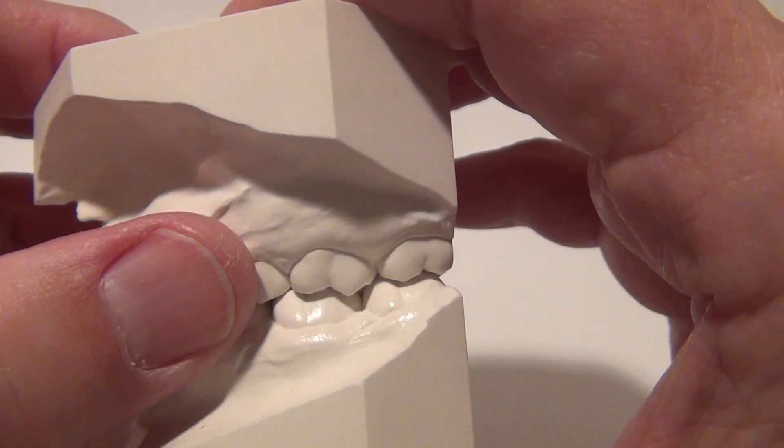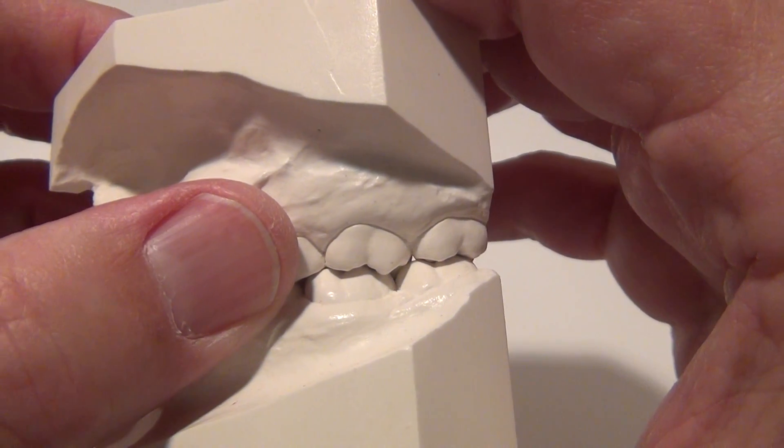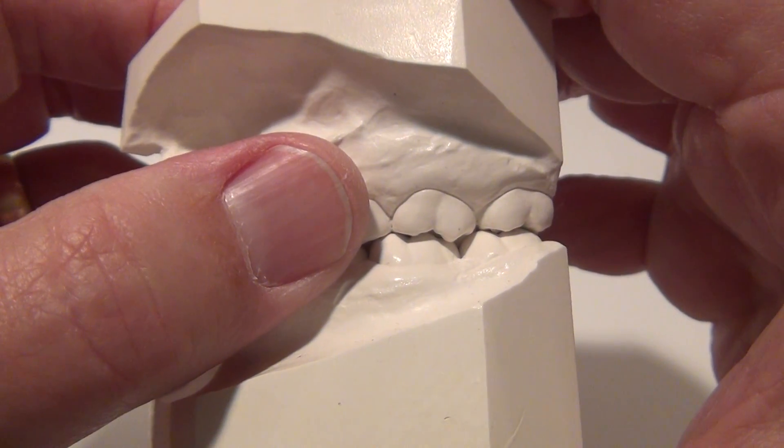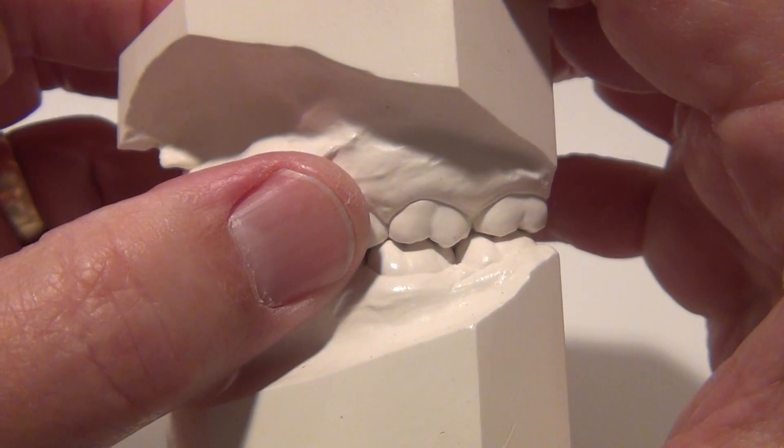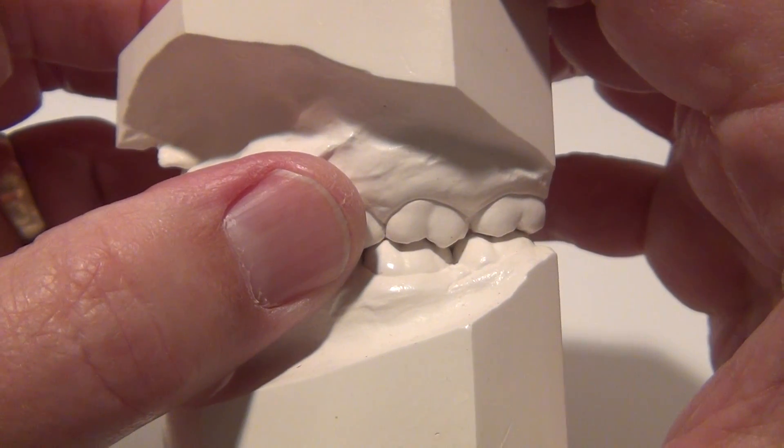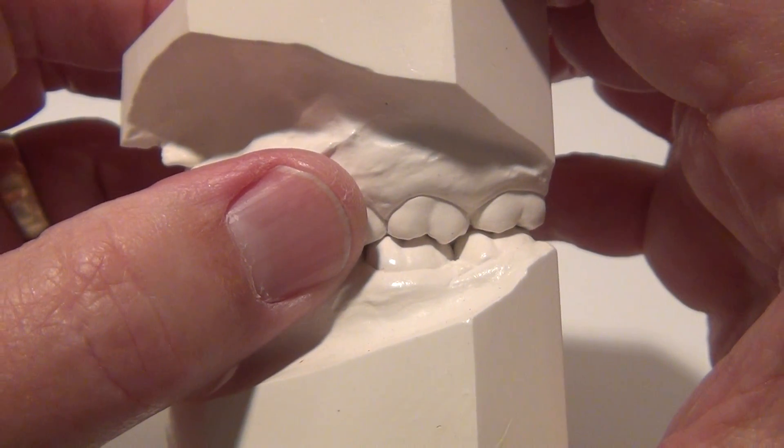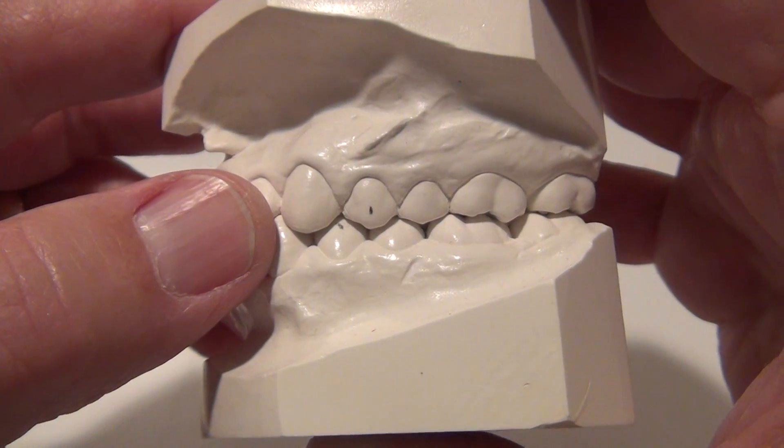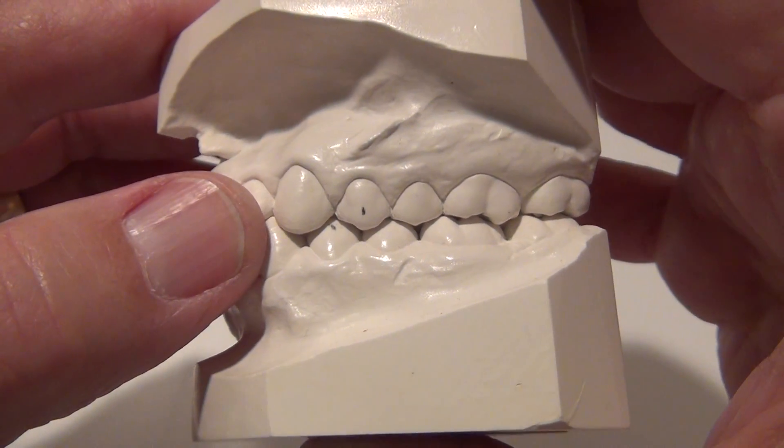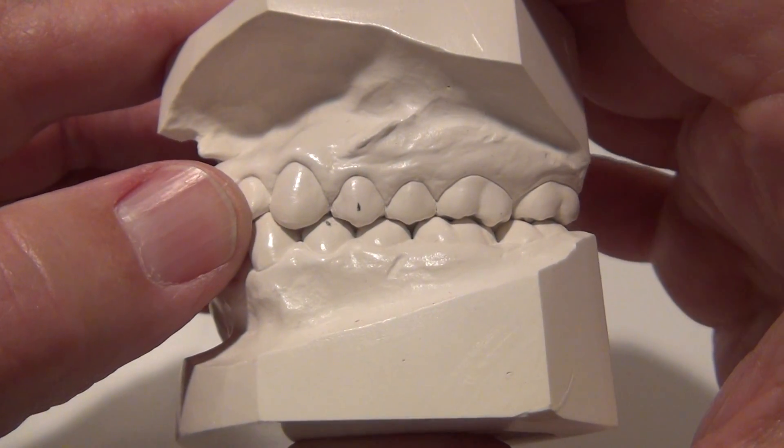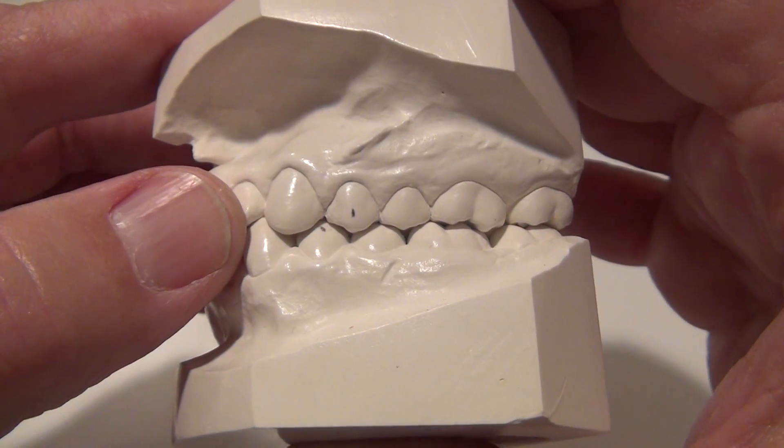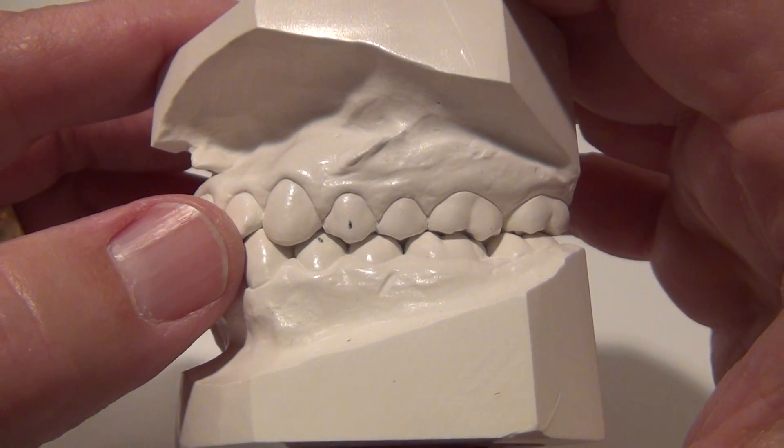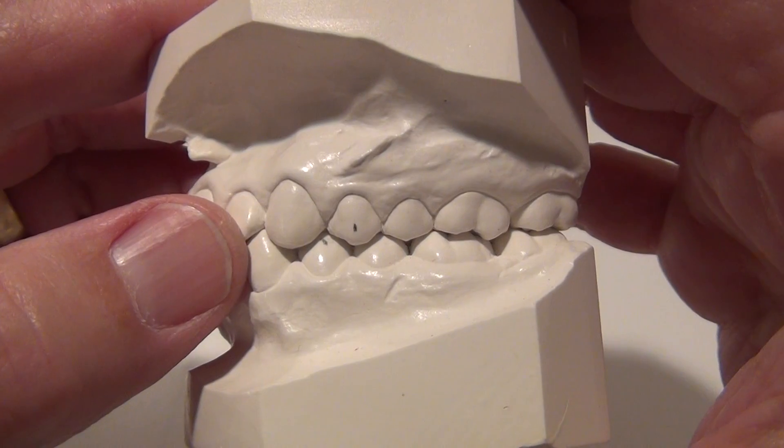Let's look at the molar relationship. Mesial buccal cusp, upper first permanent molar, fits into what? The buccal groove of the lower first permanent molar. By definition that's a class 1 molar relationship. Let's look at the cuspid. By definition, a class 1 cuspid has the cusp tip of the upper cuspid fitting into the buccal embrasure between the lower cuspid and the lower first bicuspid.